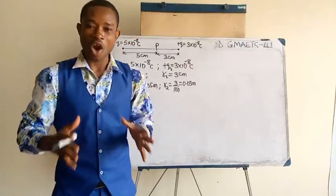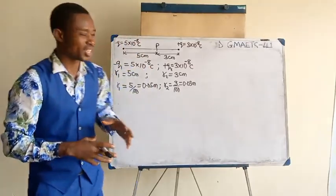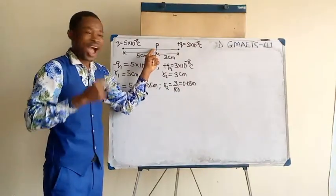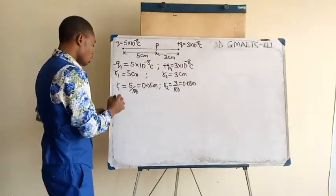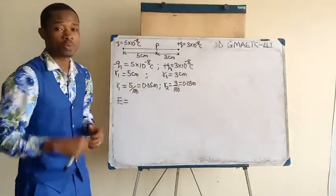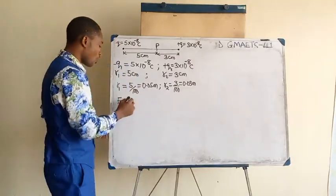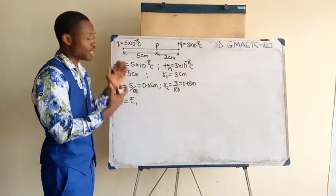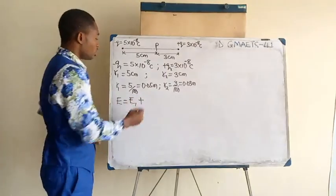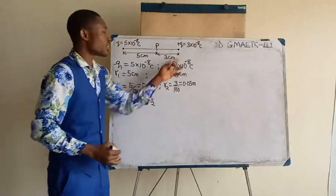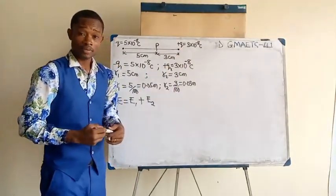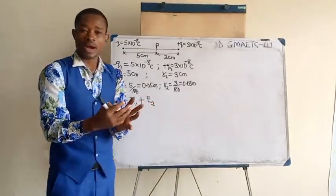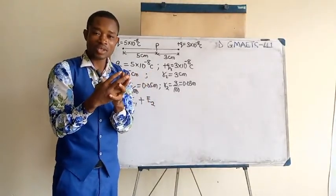This is the point where we need to think which formula we need to use in calculating the resultant electric field strength at point P. Remember I mentioned the principle of superposition. We are going to add up the electric field due to Q1 from the negative charge and the electric field due to the second charge, 3 times 10 raised to minus 8. So we calculate E1, calculate E2, then sum them.